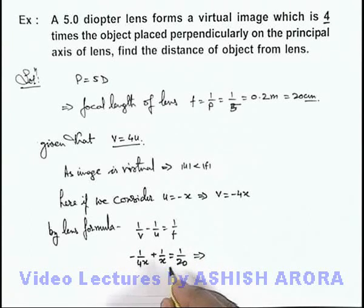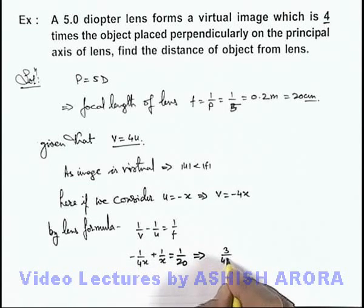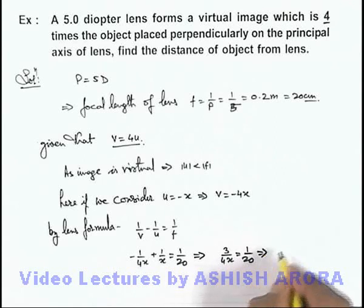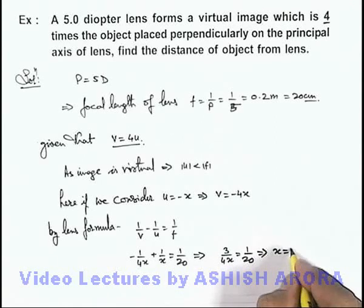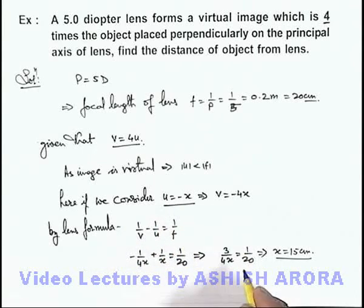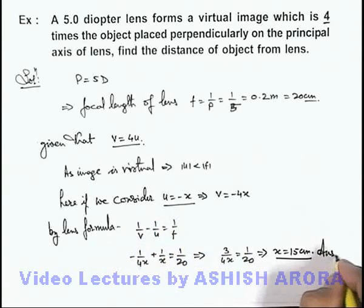On further simplifying it we are getting 3 by 4x equals 1 by 20, this implies x equals 15 centimeters. That is the object distance from the lens and that will be the answer to this problem.